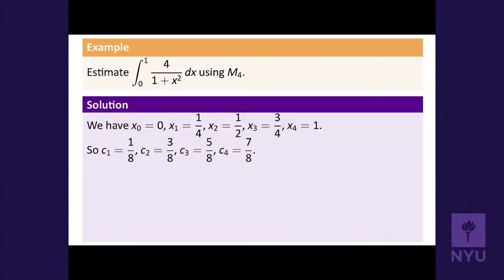Dividing the interval 0 to 1 into four pieces, we mark off points 1/4 apart: 0, 1/4, 1/2, and 3/4.